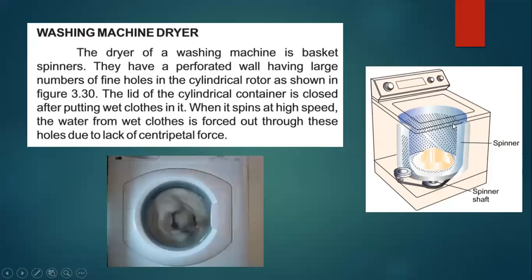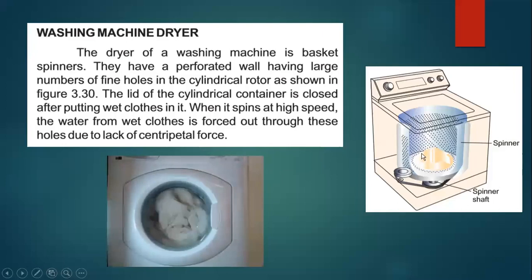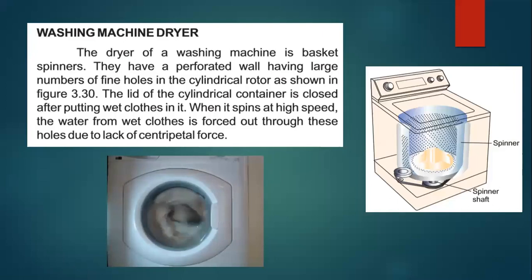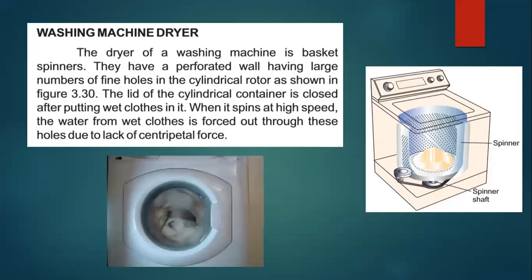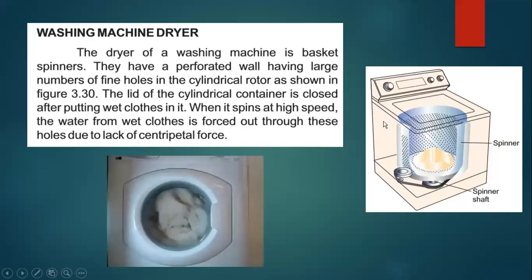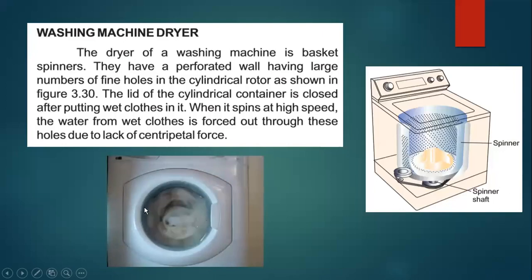When the wet clothes are put inside the basket and it spins at high speed, the water molecules do not get enough centripetal force to stay on the circular track. So the water drops move outward and exit through the holes in the walls. This is how the clothes become dry.